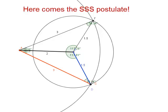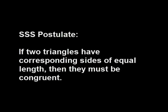Specifically, the postulate states that if two triangles have corresponding side lengths of equal length, they must be congruent.